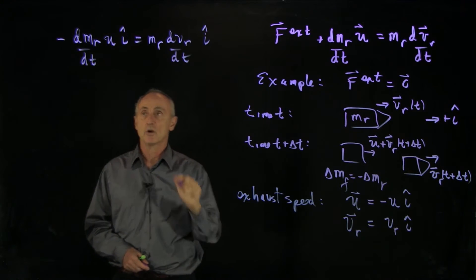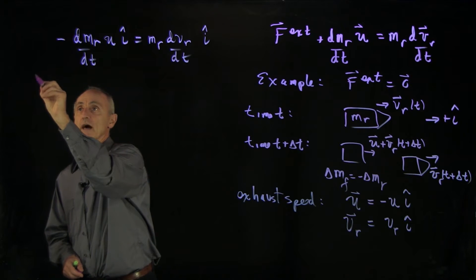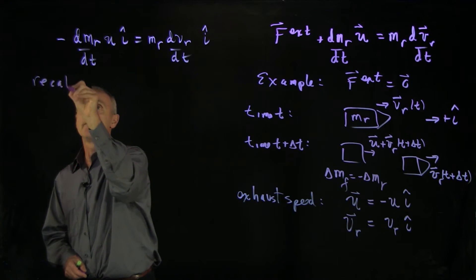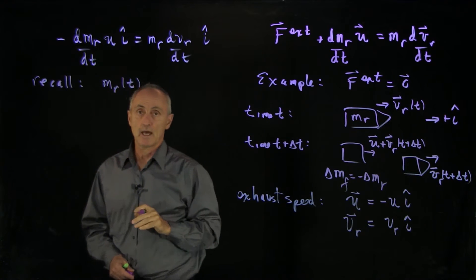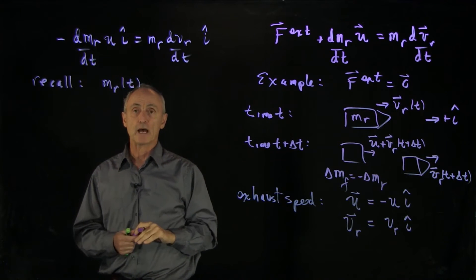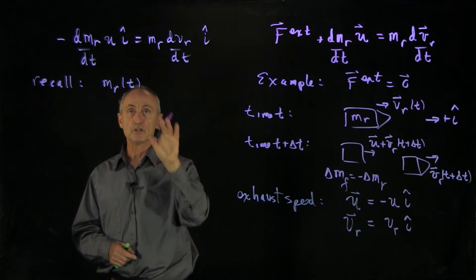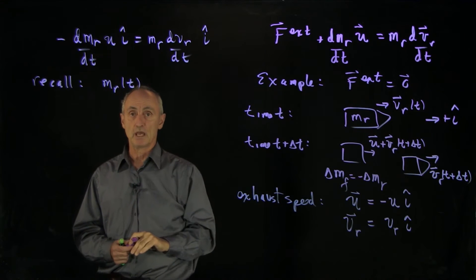Now, in this equation, remember that it's important to recall that m_r is a function of time. And unless we have an explicit model for how the mass is ejected, in principle, we can't solve for the time behavior.